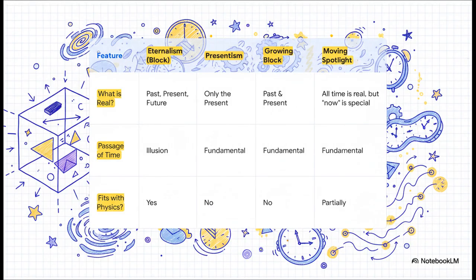This table is a great way to see the main contenders. First, you have presentism. That's our gut feeling, that only the present is real. But as we just saw with the Andromeda paradox, it just doesn't work with relativity. Whose present is the real one? Physics has no answer.